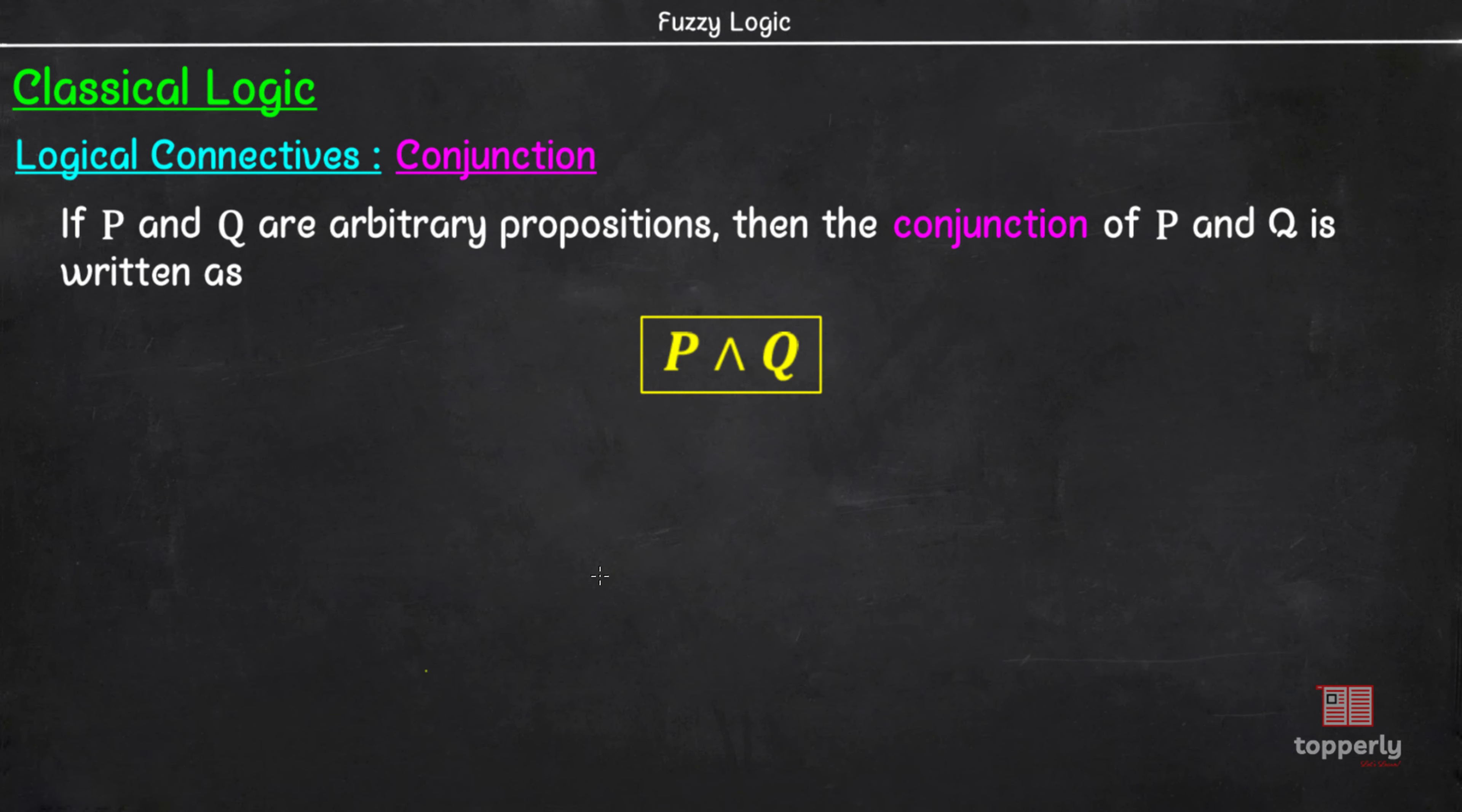Now, you might have noticed that conjunction operator in propositional logic is the rough equivalent of joining statements with AND in English language. But, is the converse true? That is, whenever there is AND present in the English statement, does that mean that statement is a conjunction of two simple statements? The answer is no, because it is not always true.